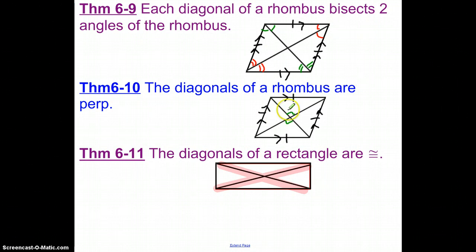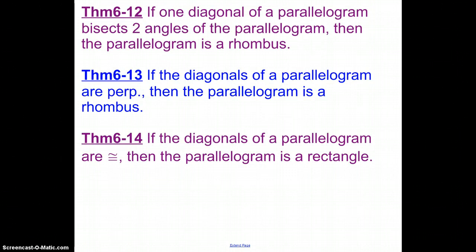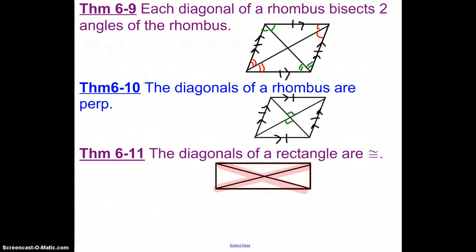Well, in this one, this is one where they are perpendicular, so that's a rhombus. The last one says that if the diagonals are congruent, then it's a rectangle, which is exactly what this one says right here.